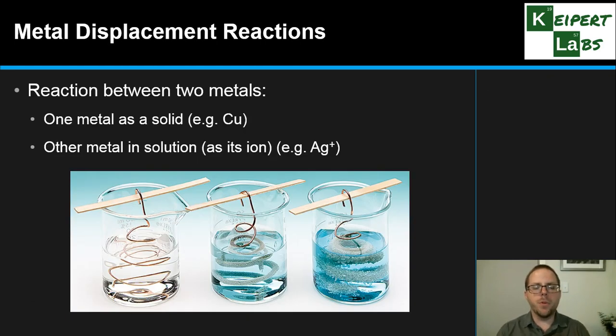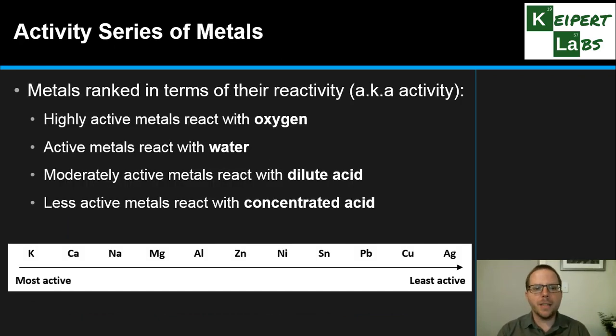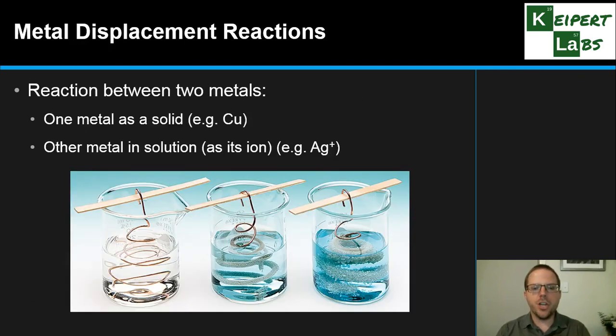So these are both examples of what we call metal displacement reactions, where we get a reaction between two metals. One that's a metal as a solid, like the copper in this example here, and the other metal is in solution in the form of its ion, like silver or Ag+. This isn't between two solid metals or two ions - this is one solid metal and one ion. When we're combining them together or allowing them to interact, we get a change that's occurring. Now, we're going to come back and try to explain exactly the mechanism of this, but one thing I want to bring in just now is this idea called the activity series of metals.